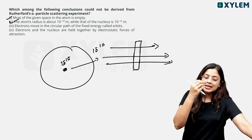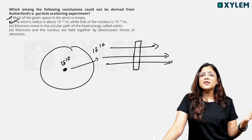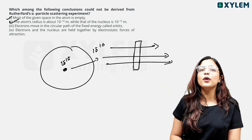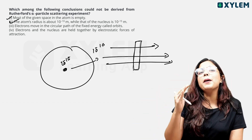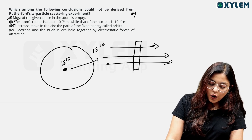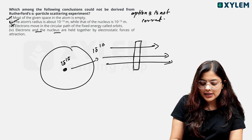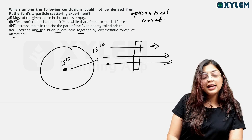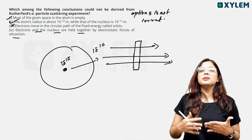Electrons move in the circular path of fixed energy called orbits. What do you say about fixed energy? Fixed radius of the circular path — that is not a valid conclusion from Rutherford's experiment, so option 3 is not correct. Electrons and nucleus are held together by electrostatic force of attraction — that is correct. Electrons are negatively charged and the nucleus is positively charged, so these opposite charges are held together by electrostatic force of attraction.